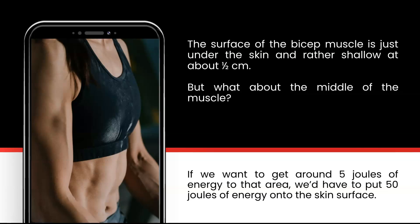So when we look at a muscle, let's say a bicep, the surface of the bicep is just under the skin and rather shallow at about half a centimeter, depending on other factors such as fat cells. The surface of the muscle would be rather easy to reach with the light. But what about the middle of the muscle? Obviously, that depends on muscle mass, but to make this easier, we'll say the middle is 2 centimeters deep. Ideally, we want to get about 5 joules of energy to that area.